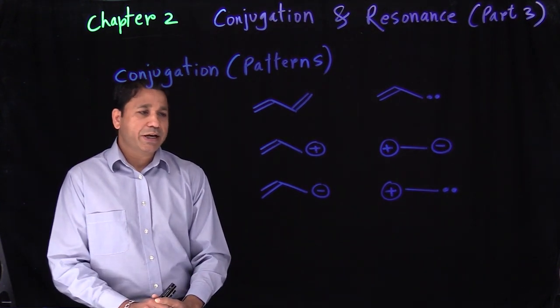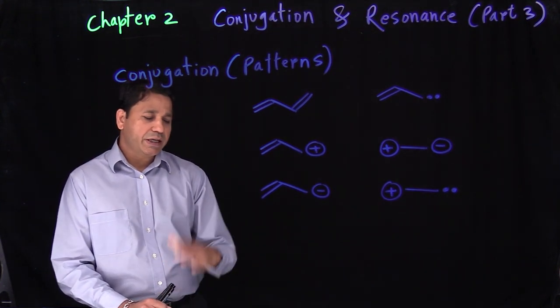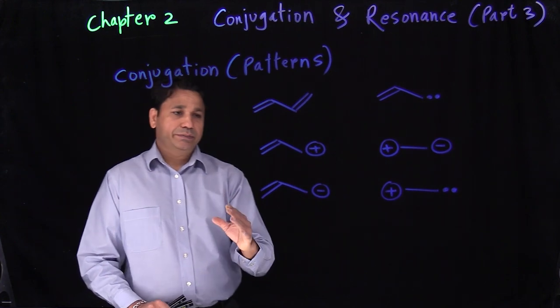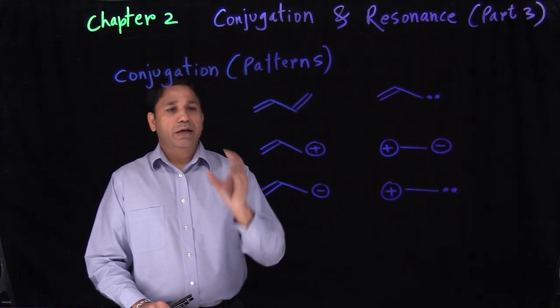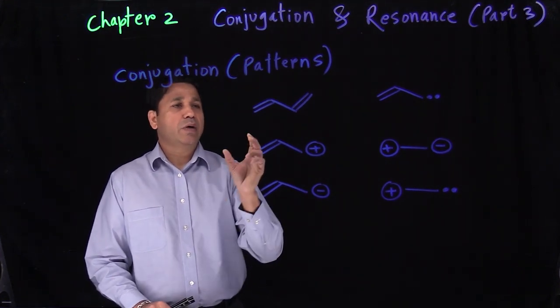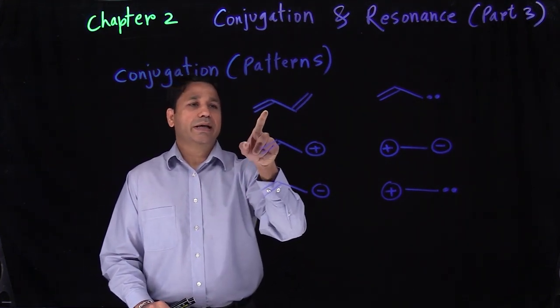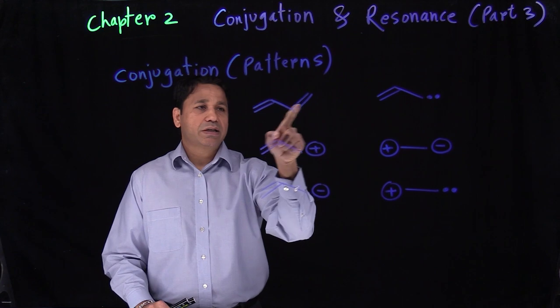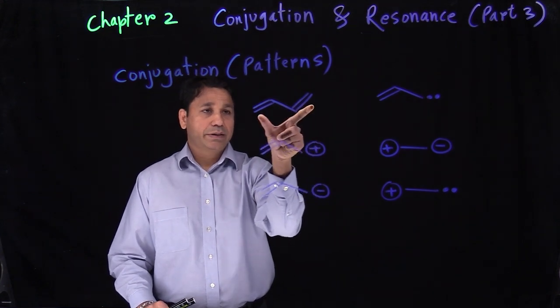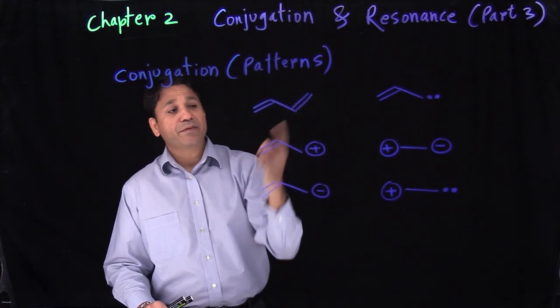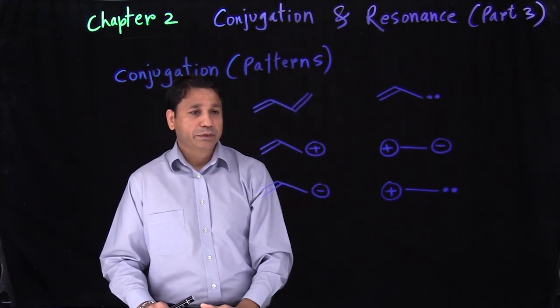What is conjugation? Conjugation is basically a pattern in your molecule. So if your molecule has a pattern like double, single, double — alternating double, single, double — then that is a conjugation, that's one type of conjugation.